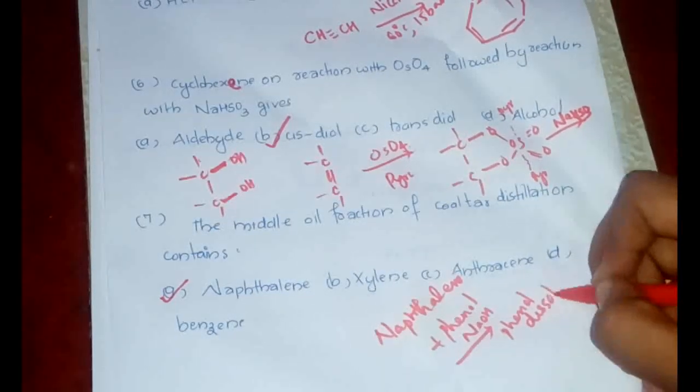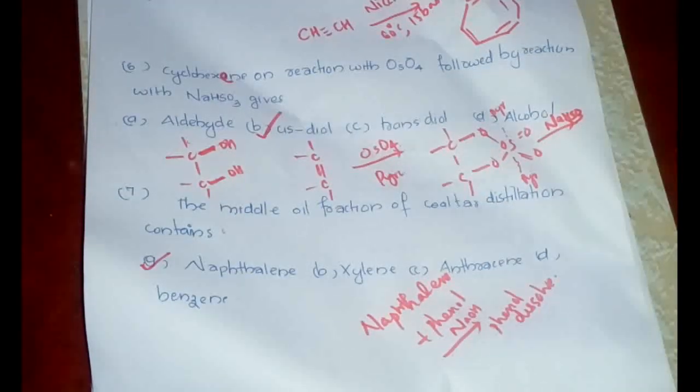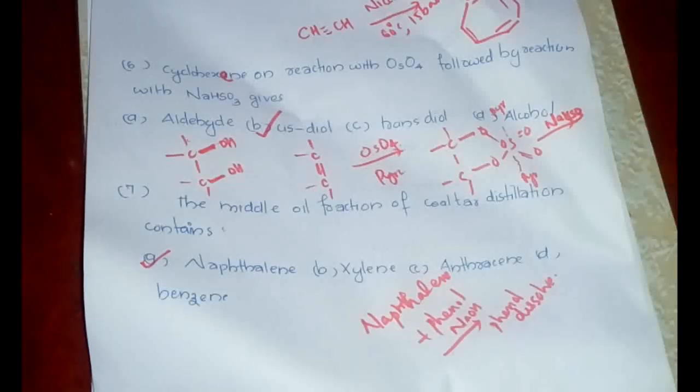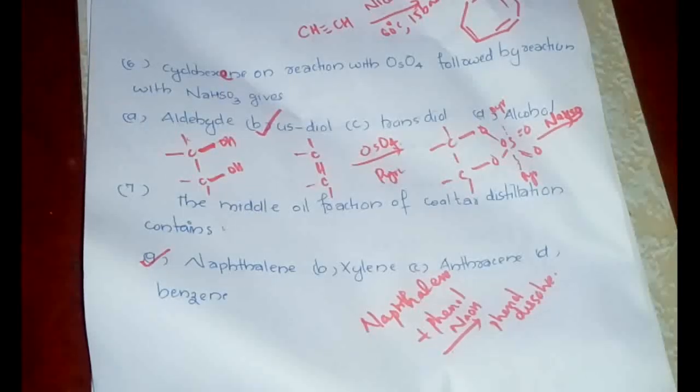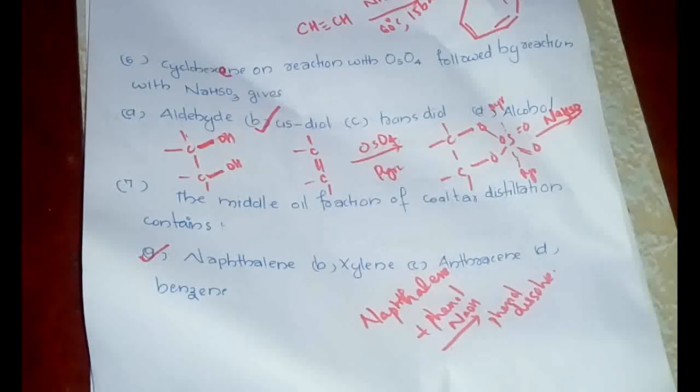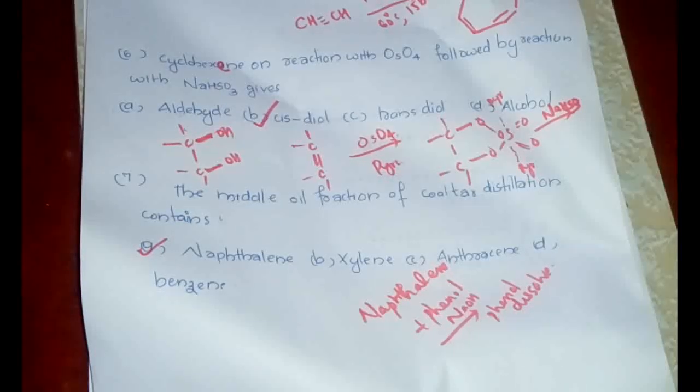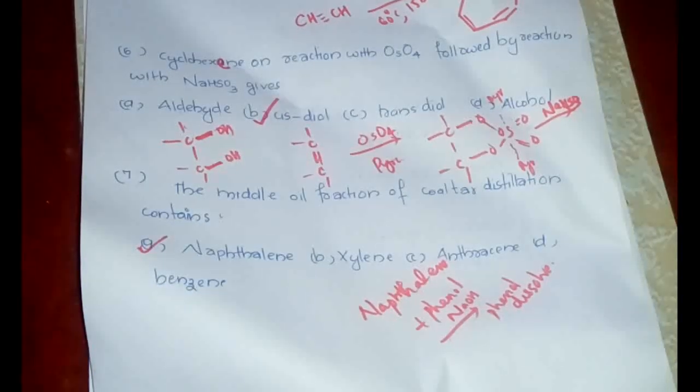Then it will be first treated with NaOH where phenol will get dissolved. Phenol dissolves and naphthalene becomes insoluble. That is the distillation that happens in the middle oil fraction of coal tar. The naphthalene and phenol will be there, treated with NaOH, out of which phenol will be soluble and naphthalene will be insoluble. Here only naphthalene is given; if combinations are given, you have to select naphthalene and phenol together.